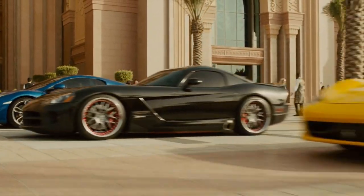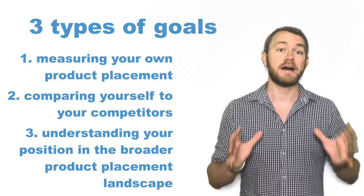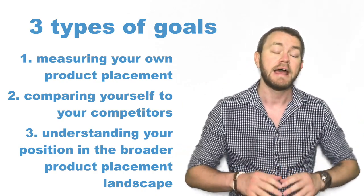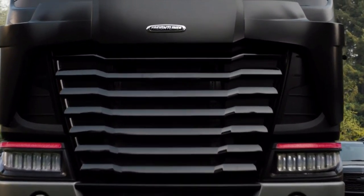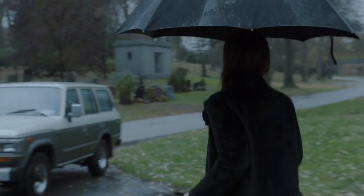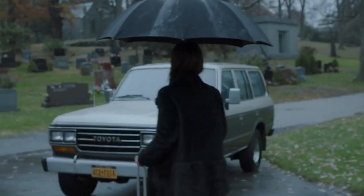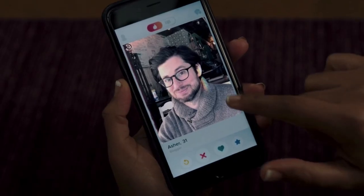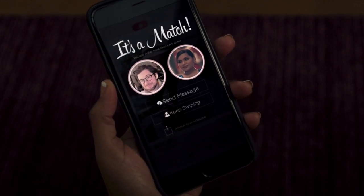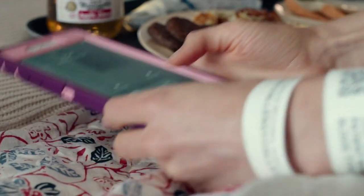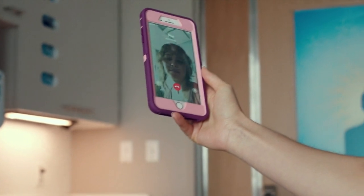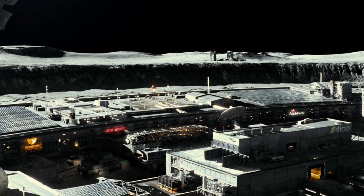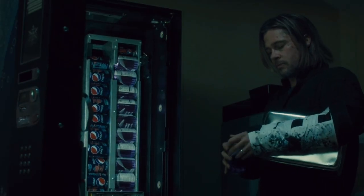By using that last option, you have the possibility of looking at what your market share is. And finally, the biggest goal you can have is understanding where your brand fits in the more global landscape. Are you a big fish in a small pond or a medium fish in a big pond? After all, being the fifth biggest car manufacturer in film or TV still means you're going to be getting more value than any brand that's the leader in their much smaller product category.